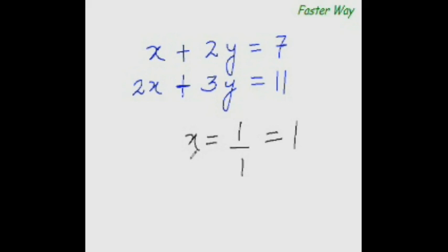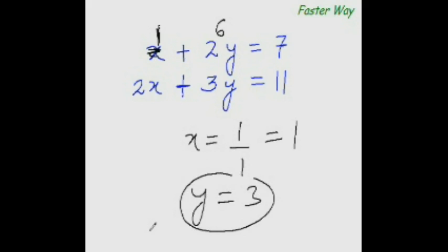Once you have the value of x, finding the other variable is very simple. Substitute x equals 1 in one of the two equations. You know that 1 plus something equals 7, so it is 6. 1 plus 6 equals 7, and 2 times what equals 6 — 2 times 3 equals 6. So y equal to 3. And there you have solved the equation. Algebra is the easiest branch of mathematics!